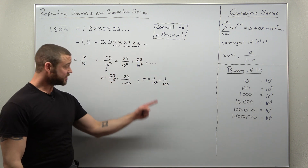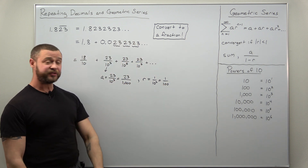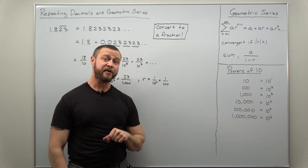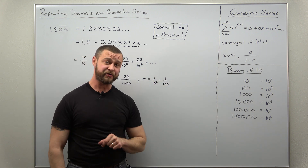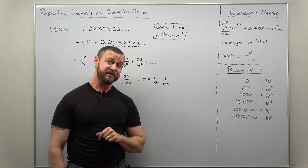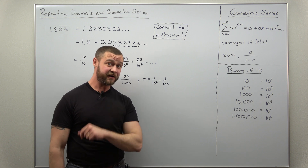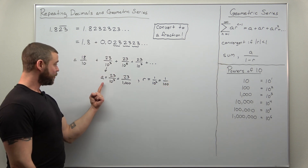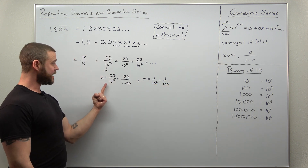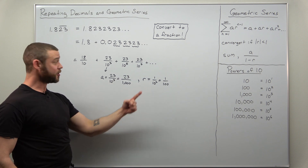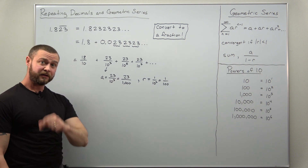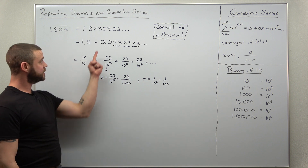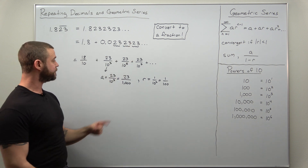Since our ratio is less than 1, we have a convergent geometric series. Now since it is convergent, we can apply the sum formula. We have our value for A, we have our value for R — let's go ahead and find the sum, the fraction for this repeating decimal part.